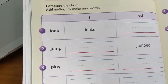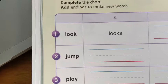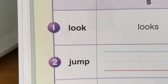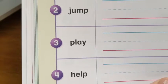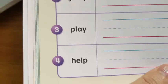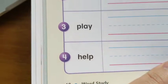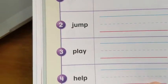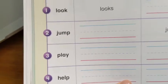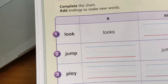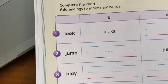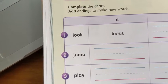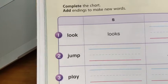On this page, you will notice some verbs — action words, things that you can do. Today, we're going to add endings to these verbs, so it can help tell us what one person or thing does, or what someone or something did in the past.